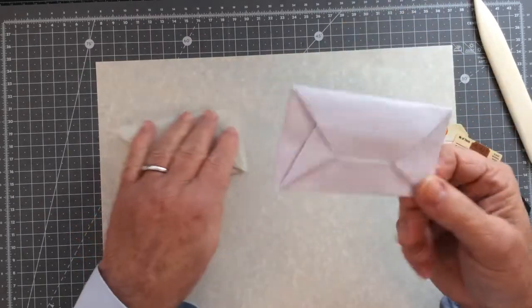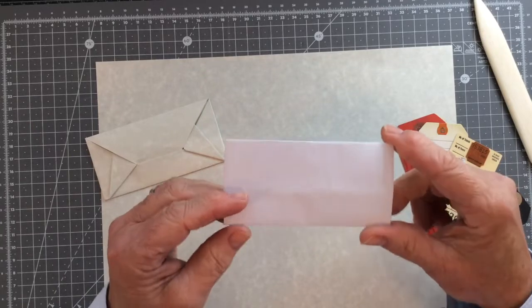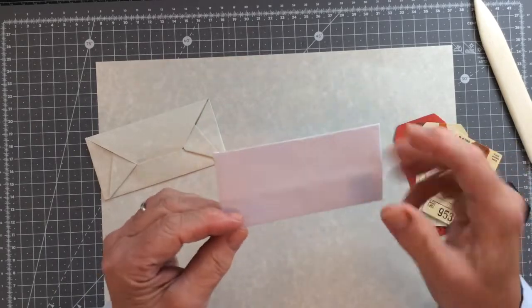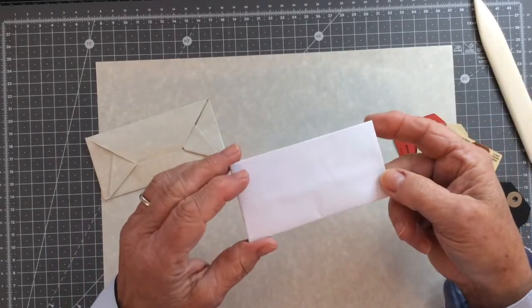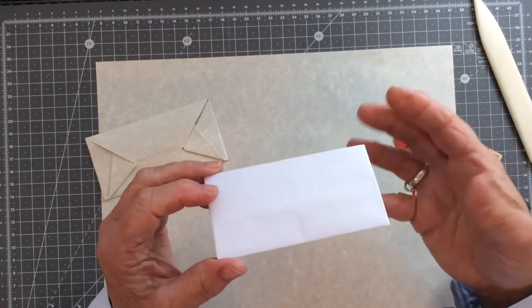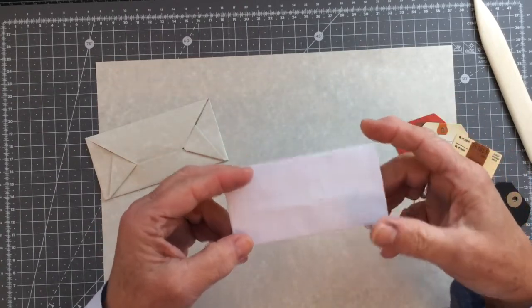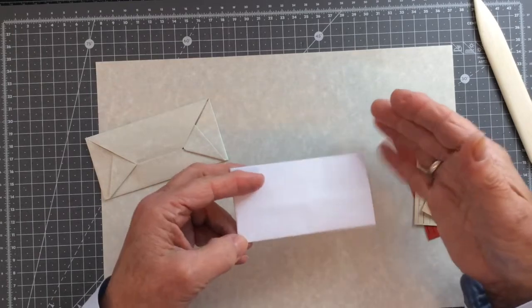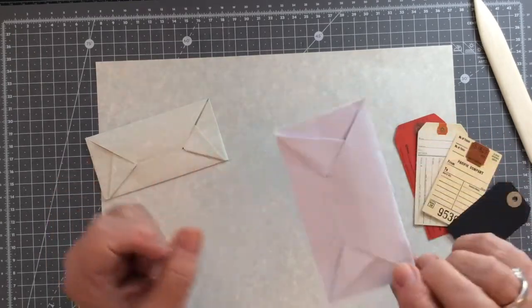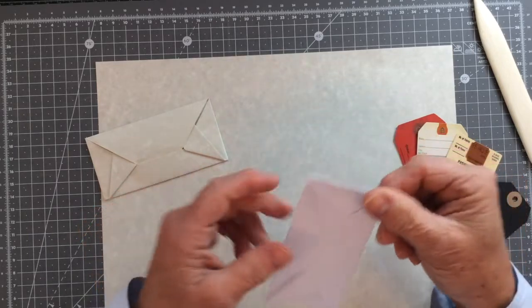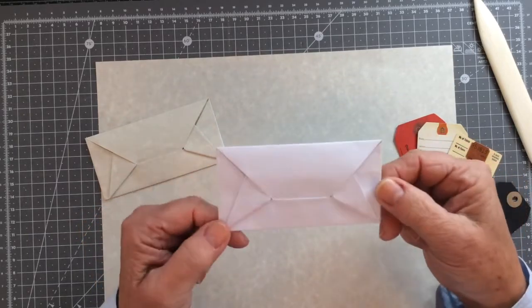Now, as always, you can just pop these in your journal as they are, as journaling spots and tuck that into a pocket. Or you might want to present a piece of vintage ledger paper or a vintage book page in a nicer way than just folding it and just include it as an origami folded letter like this.